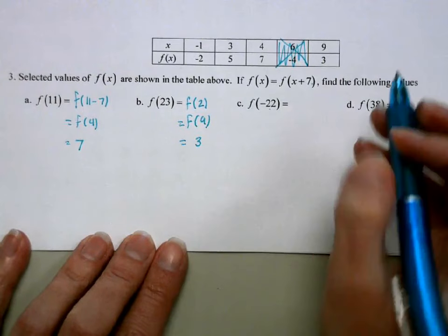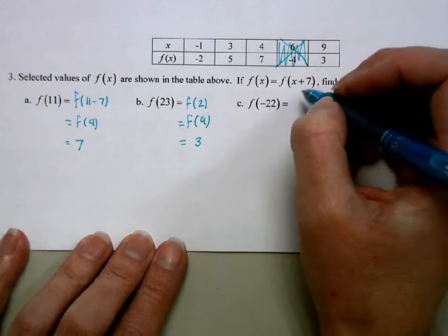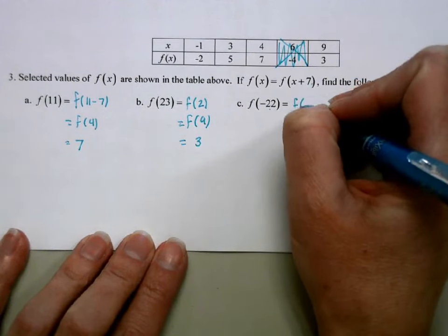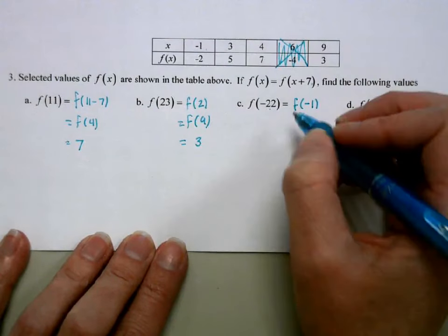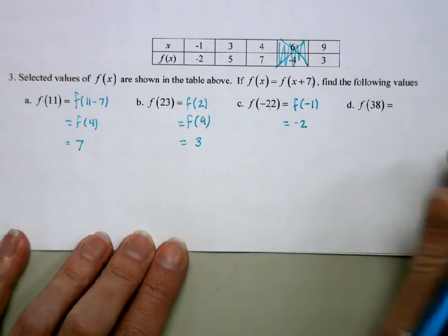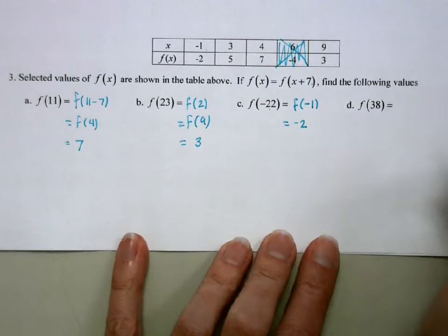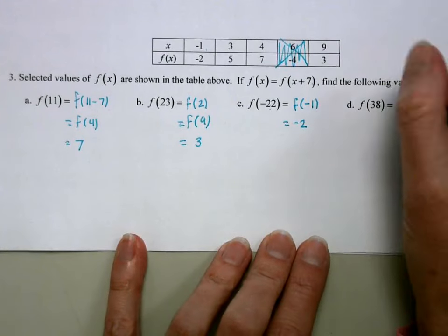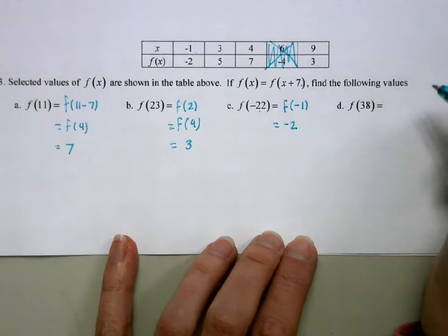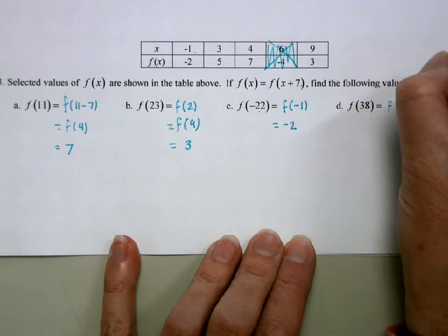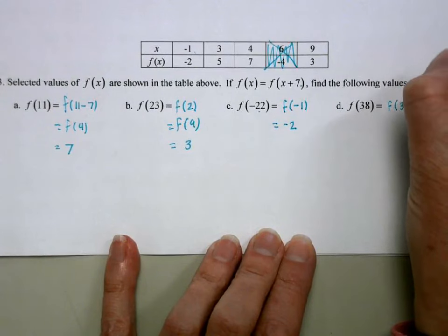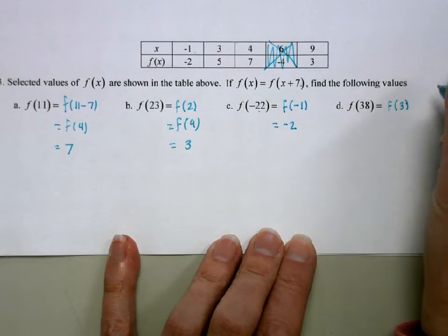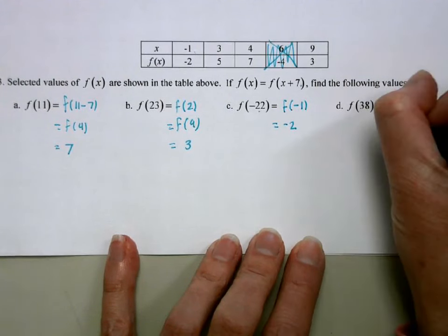For f(38), I subtract 5 periods of 7 (35) to get f(3), and f(3) = 5.